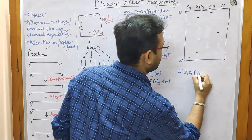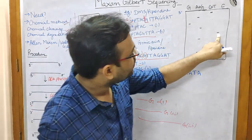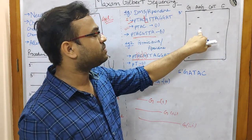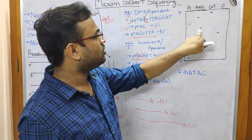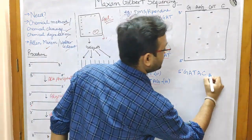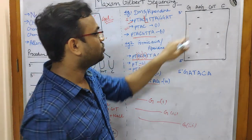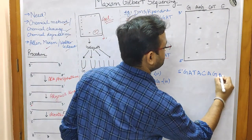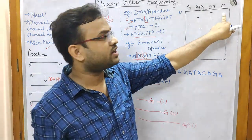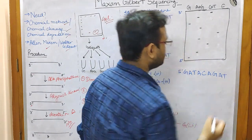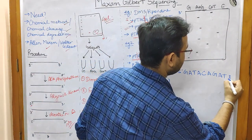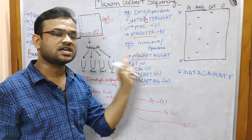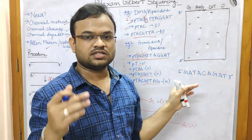Continuing to read the gel: the next band is again in A+G without a corresponding G band, so it is adenine; then cytosine appears in the C lane; then adenine again; then guanine; then adenine; and finally a band in G+T without cytosine, indicating thymine. This gives the complete sequence of the synthesized strand reading from five prime to three prime.